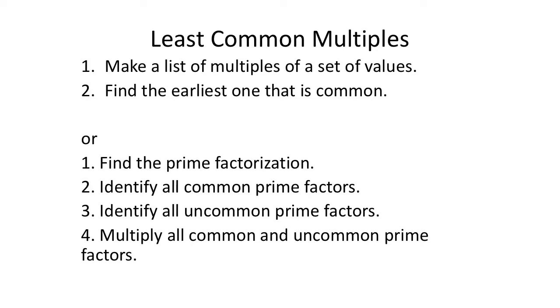Option one: you could make a list of multiples of a set of values and find the earliest one that is common. Option two: you could find the prime factorization of both numbers — or sometimes three — identify all common prime factors and the uncommon prime factors, and then multiply them all together. That will make more sense by the time we finish 3.7. So let's find the least common multiple of 40 and 35.